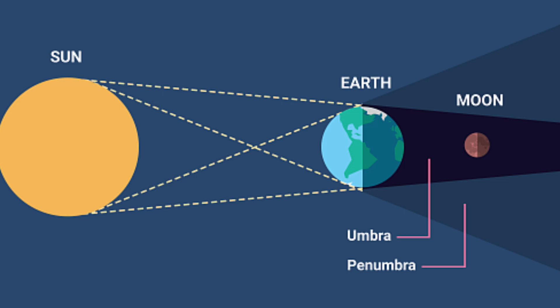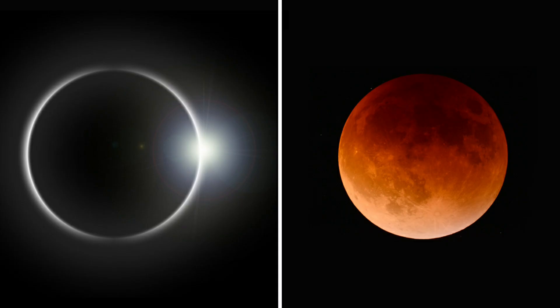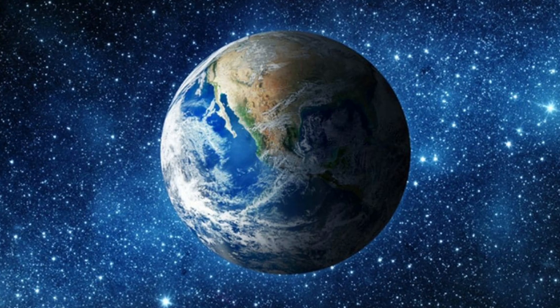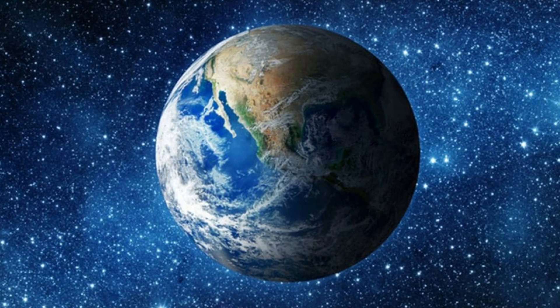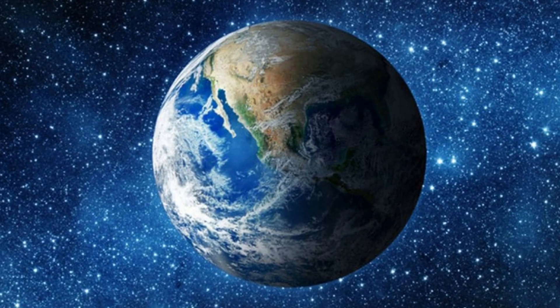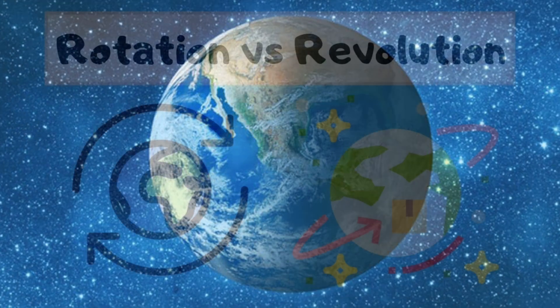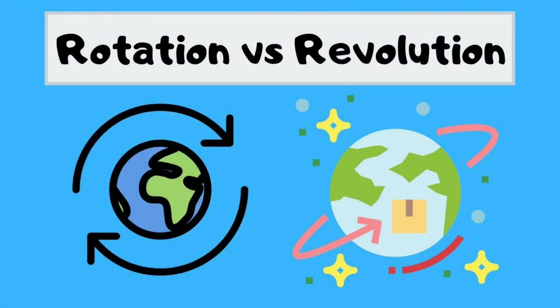Children, during a lunar eclipse, the shadow of the Earth falls on the Moon. The round shape of the shadow also proves that Earth is round in shape. Earth is not stationary — it shows two different types of movements: rotation and revolution.